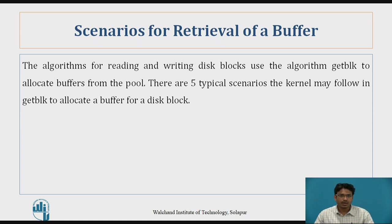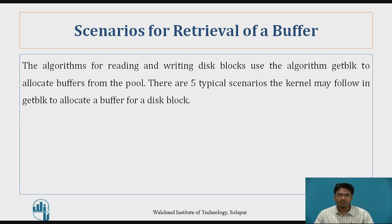The algorithm for reading and writing the disk block uses the algorithm getblock to allocate the buffer from the pool. There are typically 5 scenarios the kernel may follow in getblock to allocate the buffer for a disk block.